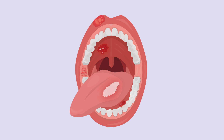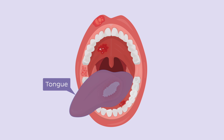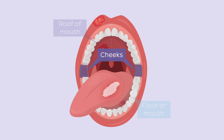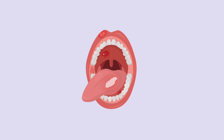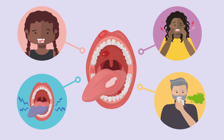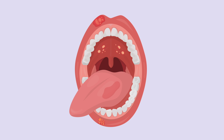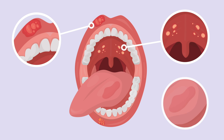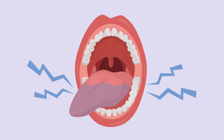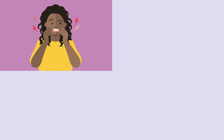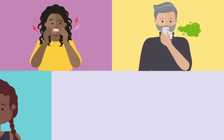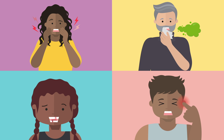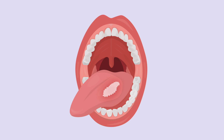Oral cancer can affect any structure of the oral cavity — lips, gums, tongue, roof and floor of the mouth, and cheeks. It can present itself as a variety of signs and symptoms. Sometimes these symptoms mimic common, benign conditions, such as sores on the lips or inside the mouth, rough spots or crusty areas, numbness, pain or tenderness in the mouth, chronic bad breath, loose teeth, or even earache. Many times it presents as a plaque or lump that is variable in shape and colour.